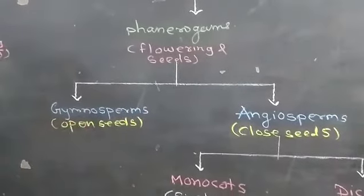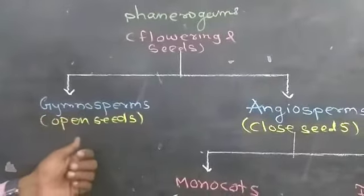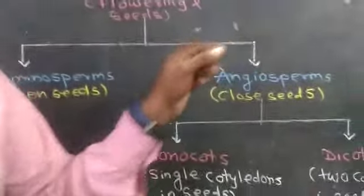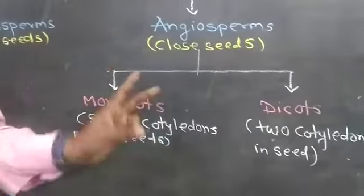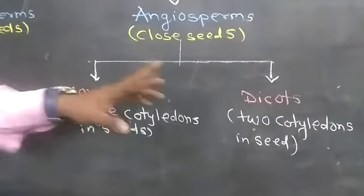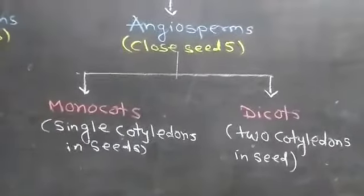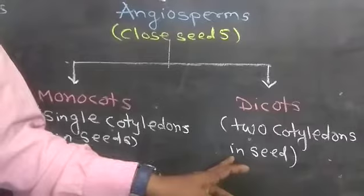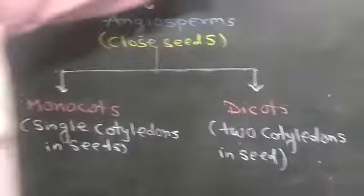The term Gymnosperm means open seeds — the seeds can be exposed openly. Angiosperm is divided into two parts: the first part is Monocots and the second one is Dicots. Monocots means single cotyledon in the seeds.